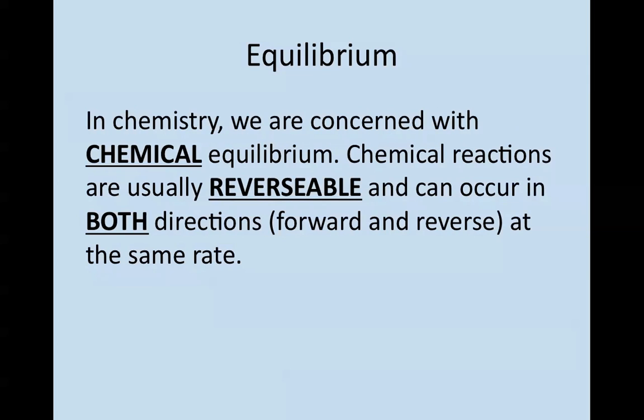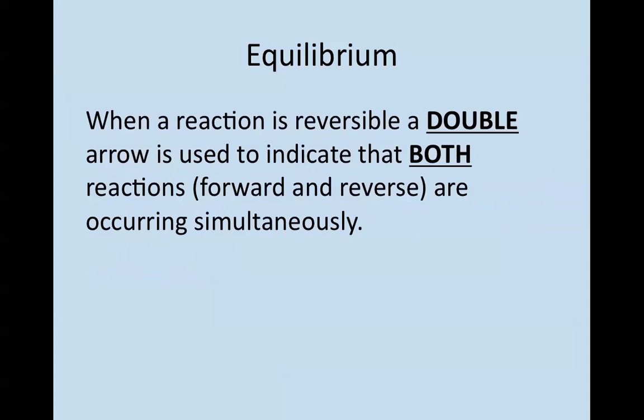So in chemistry, we're often concerned with chemical equilibrium. Chemical reactions are usually reversible and occur in both directions, both the forward and reverse reactions can happen at the same time and at the same rate.